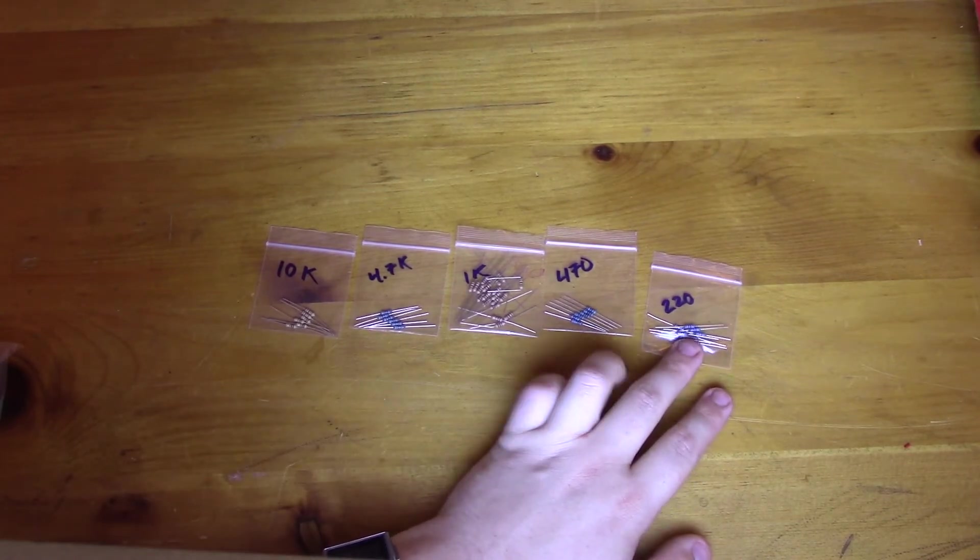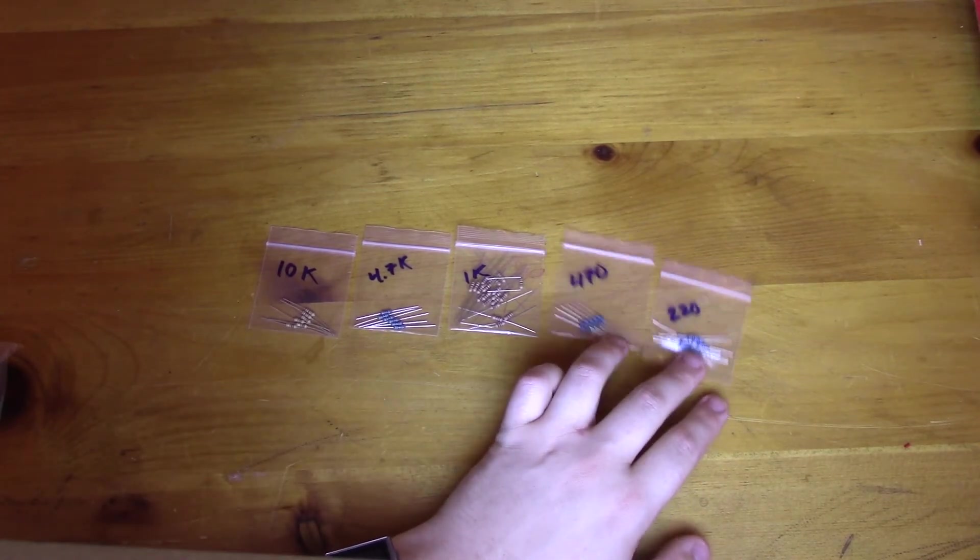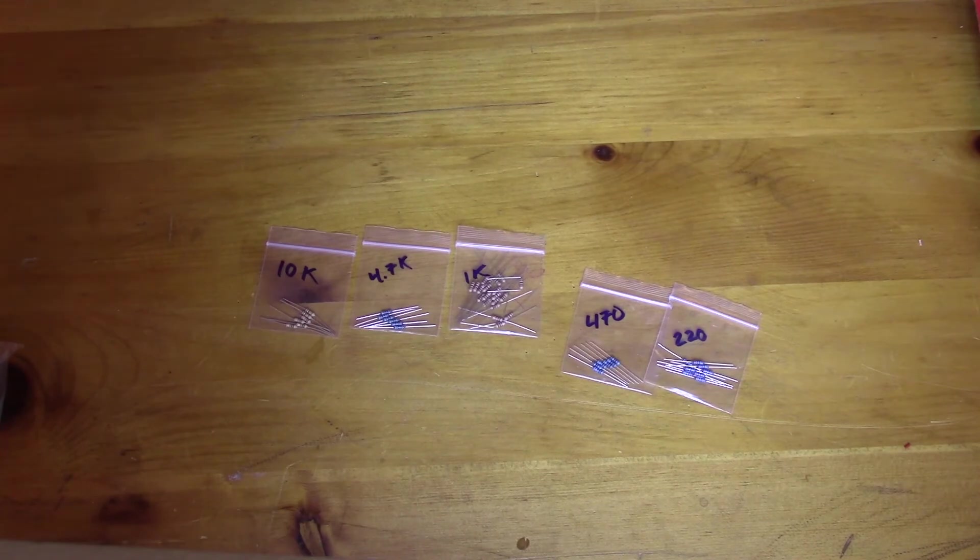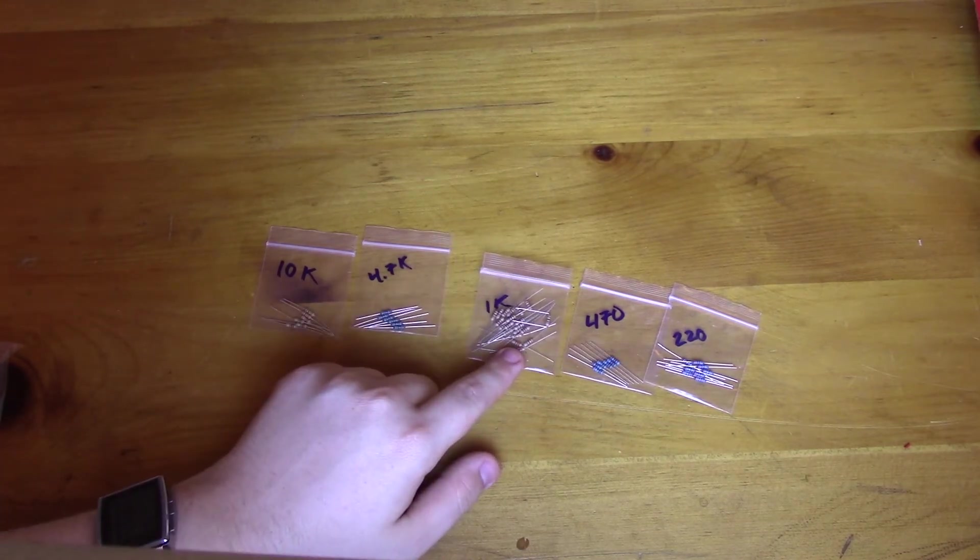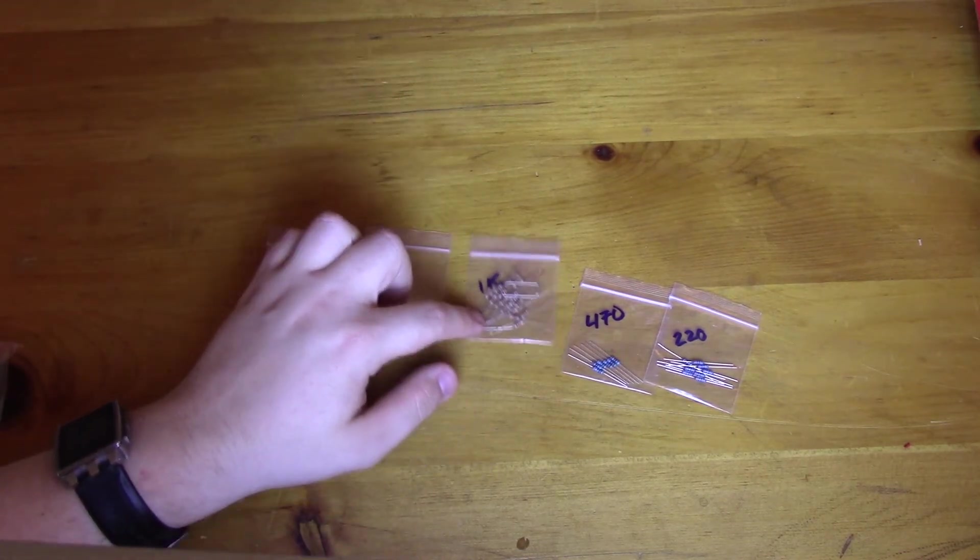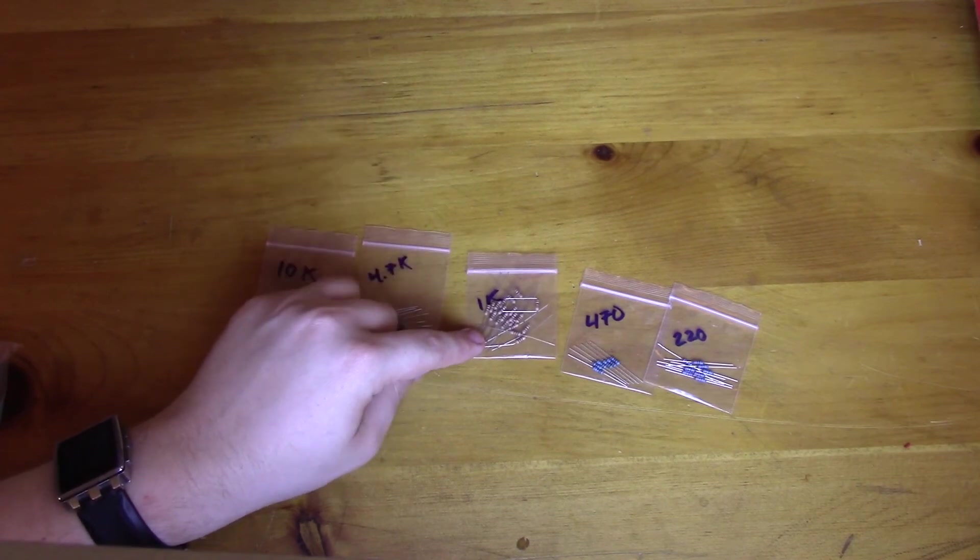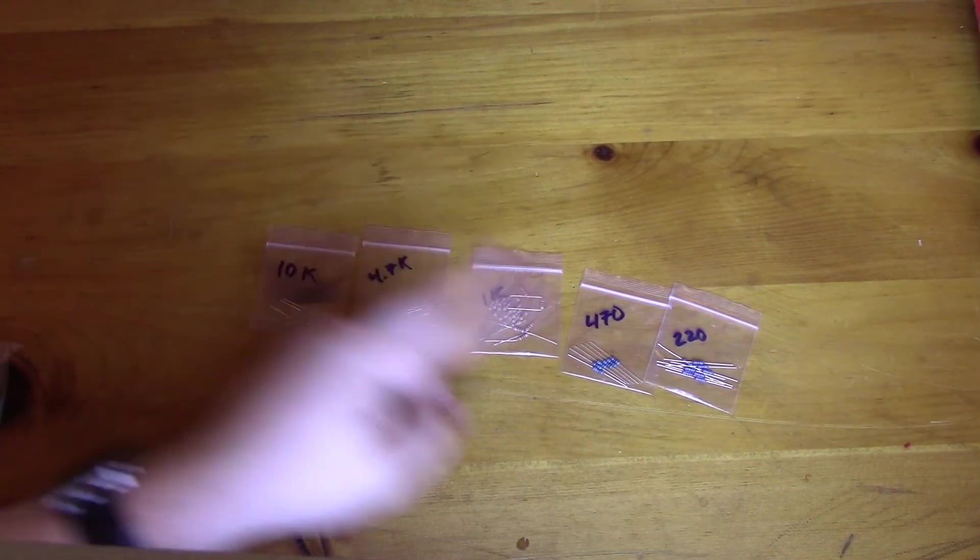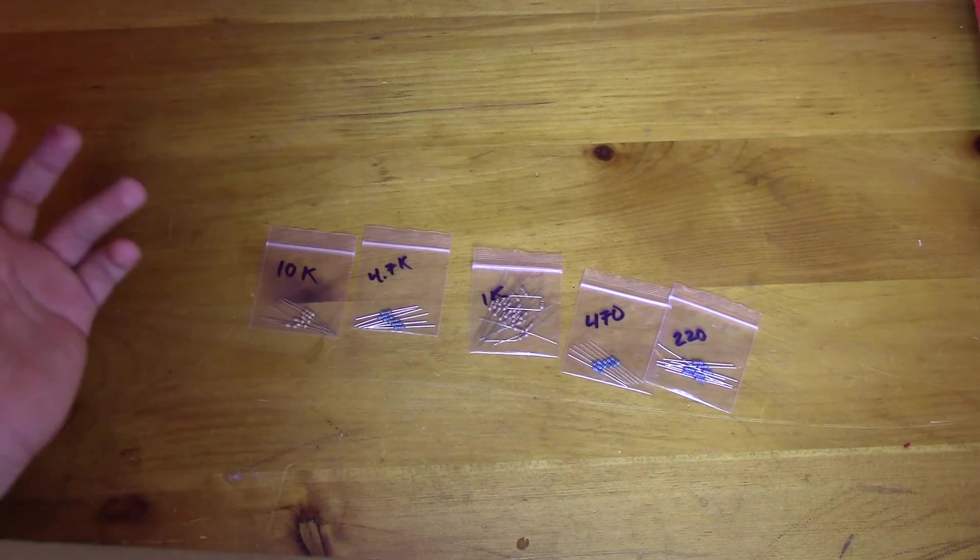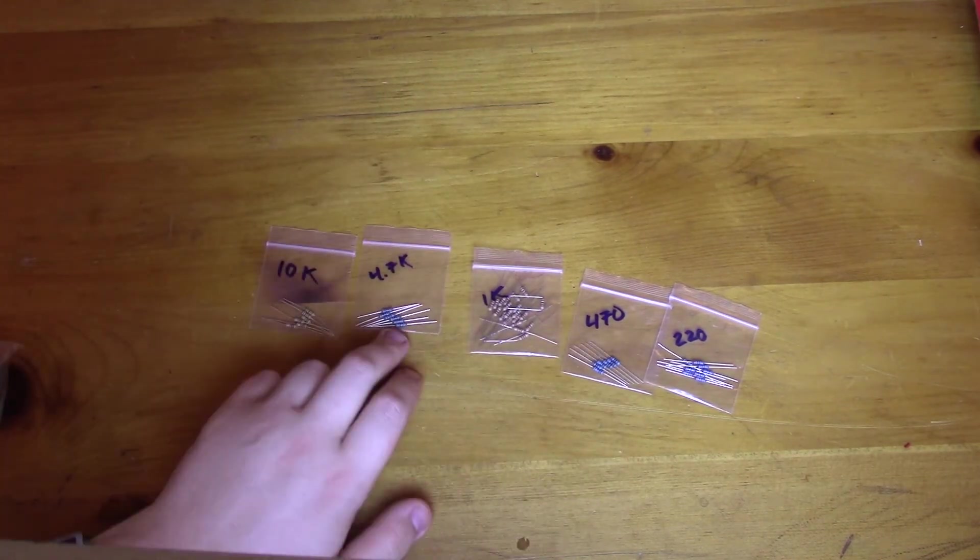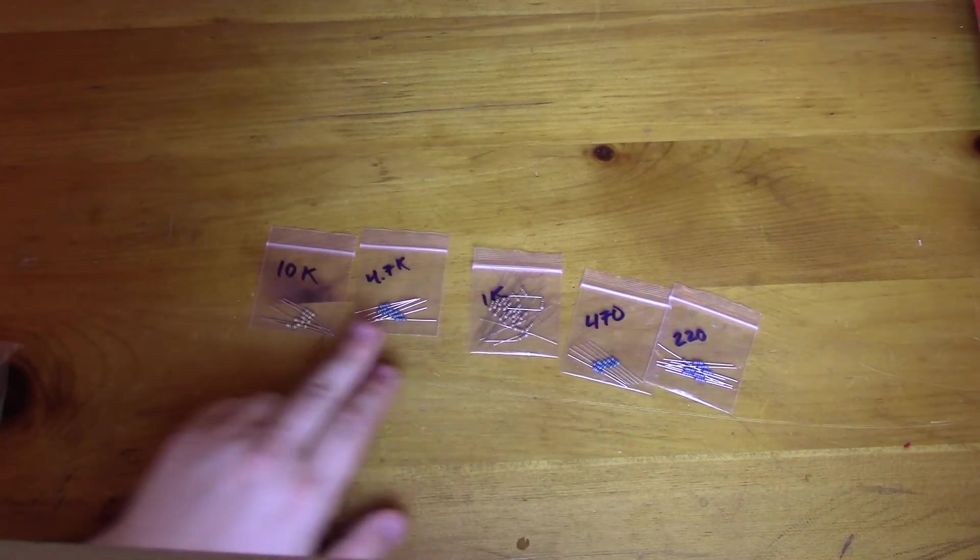So I keep 220 and 470 ohm resistors around. Those are pretty good for LEDs and your current limiting resistors in general. I got 1Ks. I honestly default to 1K for almost everything and pivot between if I need more or less.